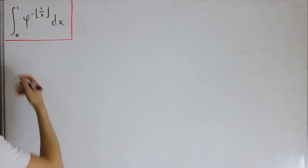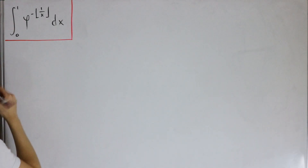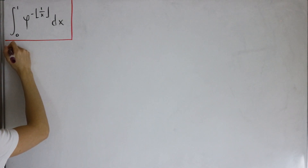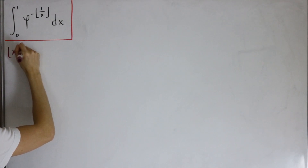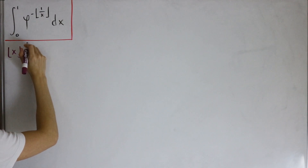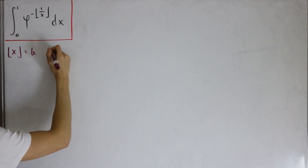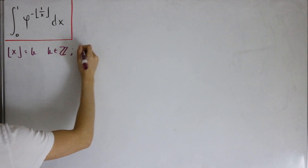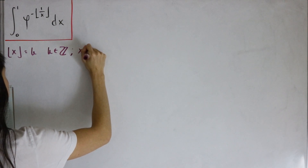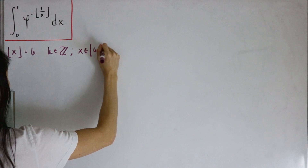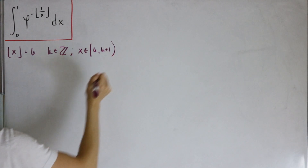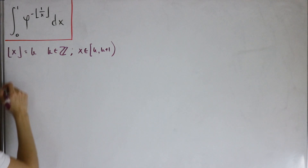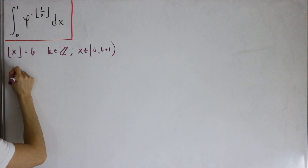First, let's utilize the definition of the floor function — that being the greatest integer function. So floor(x) = k such that k is an integer and x is in the bound [k, k+1) — inclusive on k, non-inclusive on k+1. Using that definition, let's now perform our substitution.